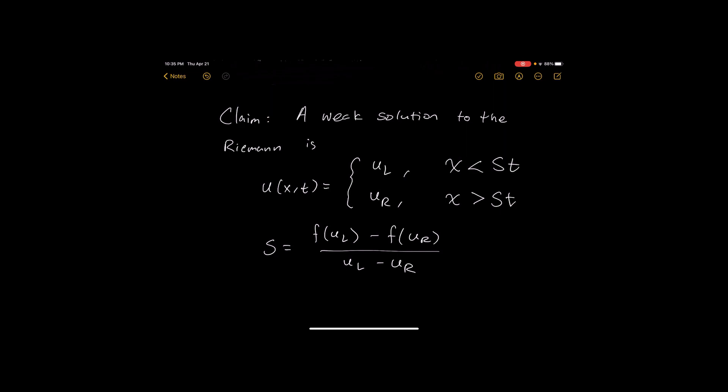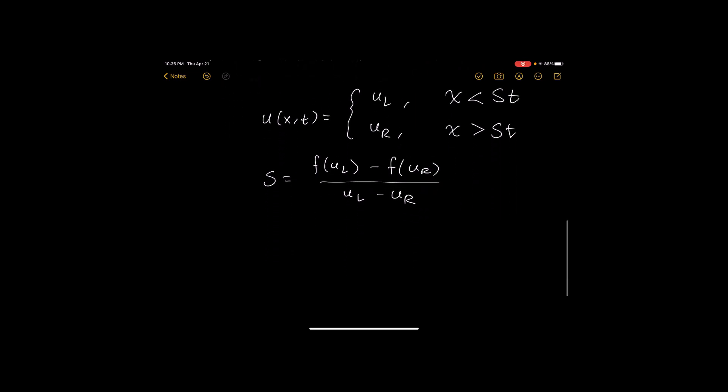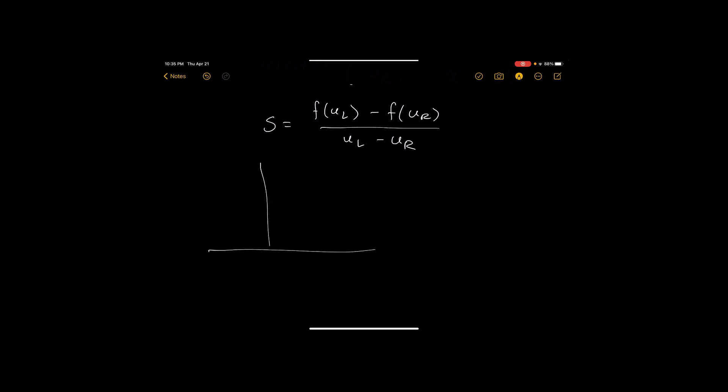So this is what I claim the solution is no matter whatever the flux happens to be. For the Riemann problem this is a solution. Okay, and let's just draw a picture to give you an idea what's going on here. So if we draw in the xt plane, we just assume s is positive for now. We're going to have this line. This line is t equals to x divided by s.